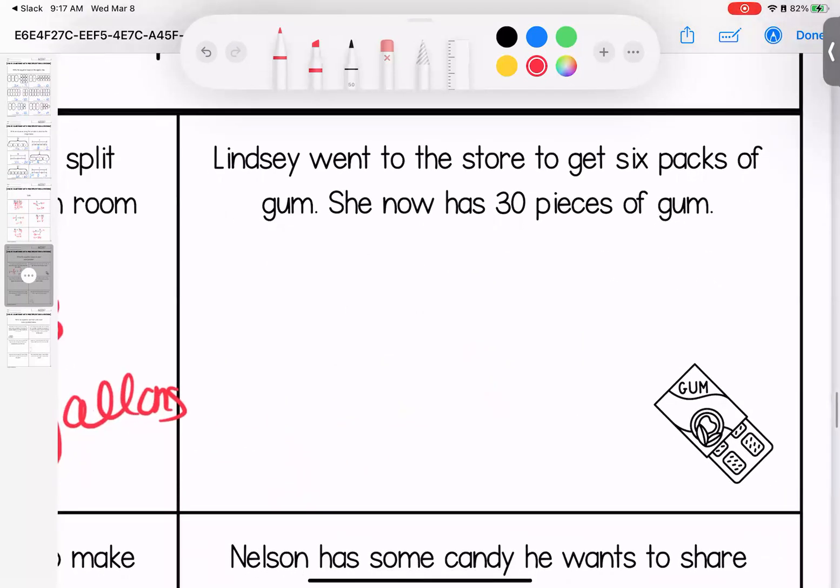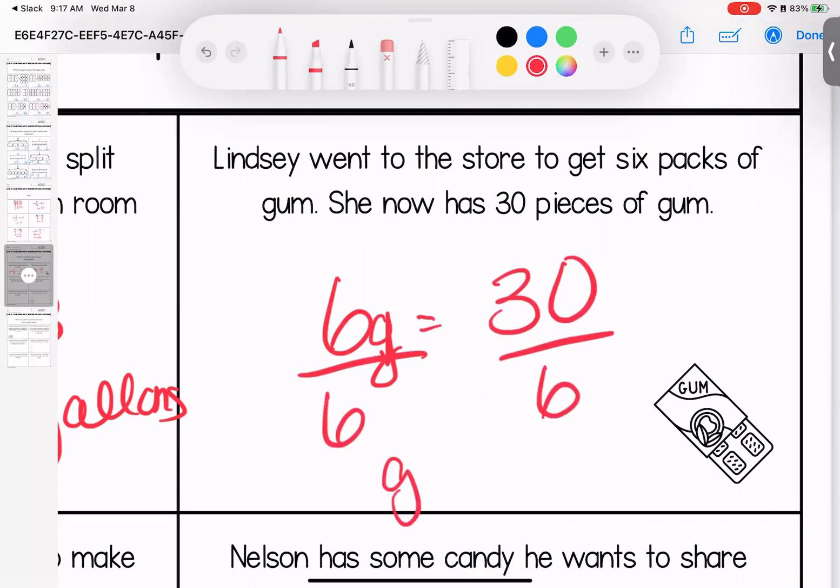Over here, Lindsay went to the store to get six packs of gum. She now has 30 pieces. So six packs times however many pieces of gum are in each gives me 30. Sticky numbers, I divide. Each gum pack has five pieces.